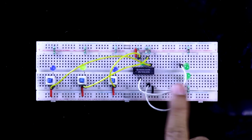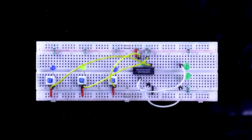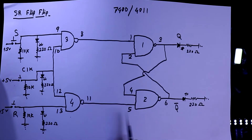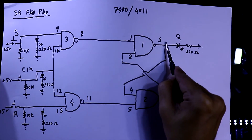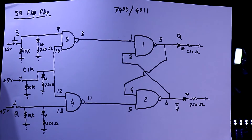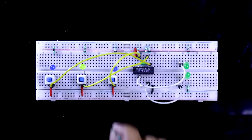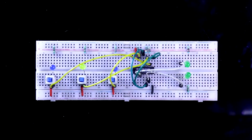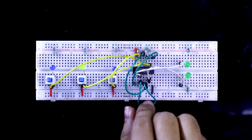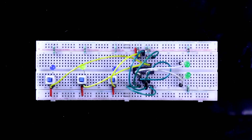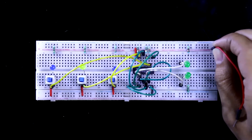Now we have to connect the internal connections: pin 8 and 1 are connected, pin 11 and 5 are connected, pin 3 and 4 are connected, and pin 2 and 6 are connected. These four internal connections complete the circuit. Now we connect both the negative rail and the positive rail.